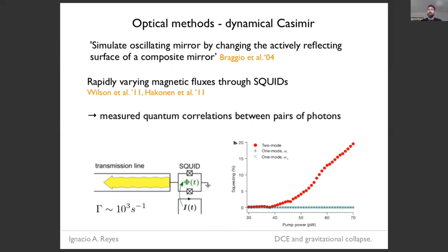However, experimentalists have found a beautiful way out of this using optical methods. So the idea is to simulate the oscillating mirror by changing the actively reflecting surface of a composite mirror. So in practice, I think the best example of this was a paper around 10 years ago where you have a transmission line, which that's going to act as your space time. And at the end of that, you have one of these superconducting interference devices, which is basically a device that is very sensitive to the magnetic flux that is going through it. So what they did is to vary this magnetic flux very, very fast. And this is something you can do really fast. And when you do that, what happens is that the effective length of the circuit is changing very fast and that mimics this moving mirror. And with that, you can get, you can produce many photons.